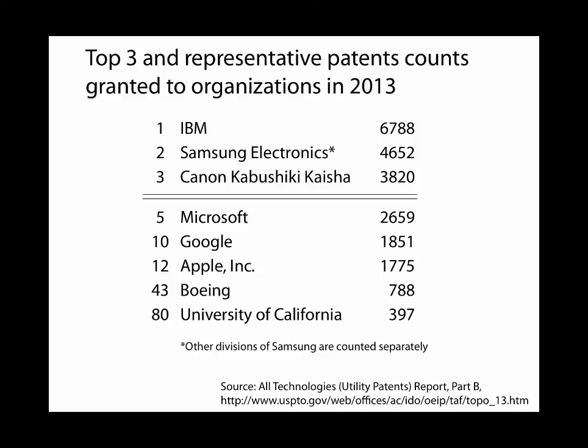Apple is number 12, and the University of California is at number 80. IBM's 6,788 patents in a year corresponds to 26 per day, or 3 per hour — meaning every 20 minutes of every workday in 2013, on average, IBM was granted a patent.